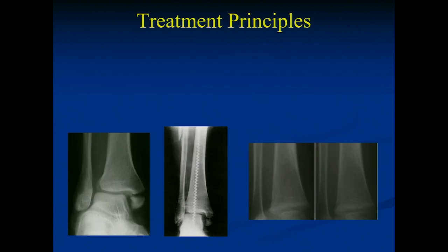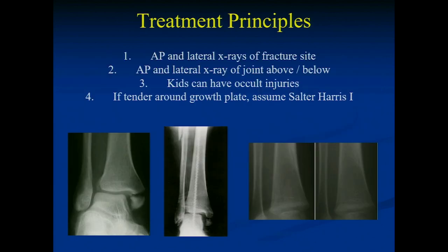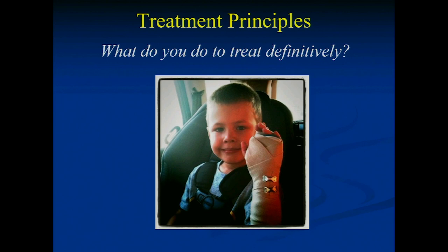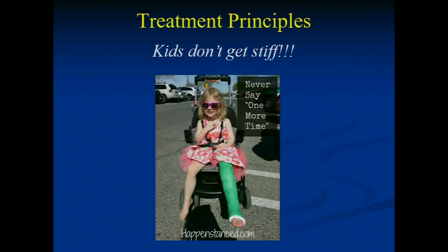Key treatment principles for pediatric fractures: always get X-rays above and below the injury, because kids will say it's their hip but it's their knee, or their ankle but it's their knee. If they're tender around the growth plate, assume there's an injury there. Put them in a cast rather than a splint — kids will take splints off in two days even if something's broken. Kids don't get stiff, so immobilize them if in doubt.